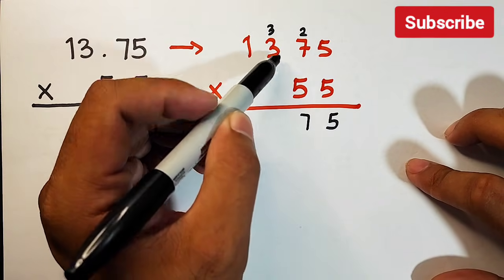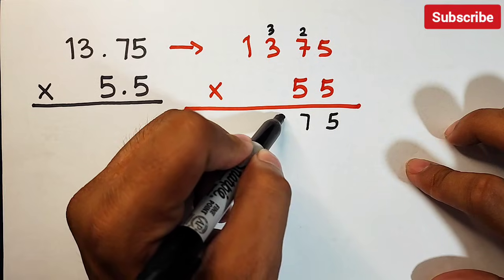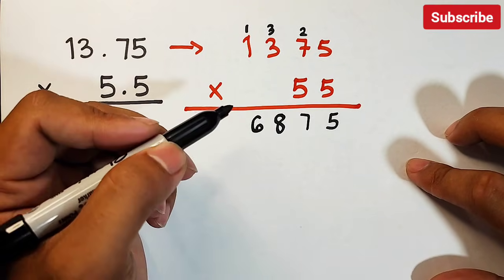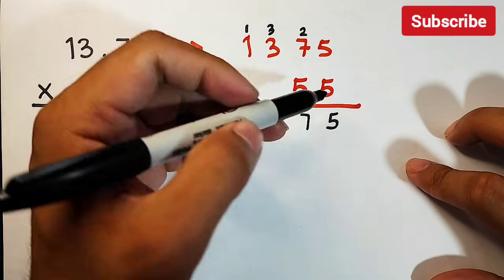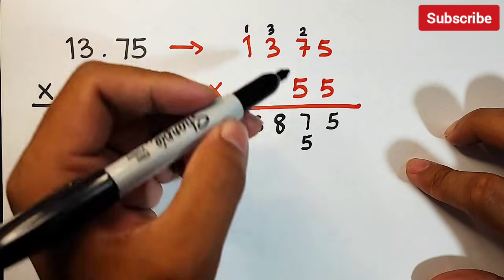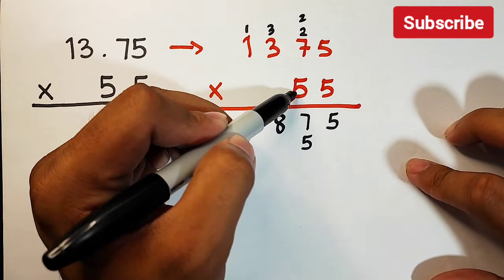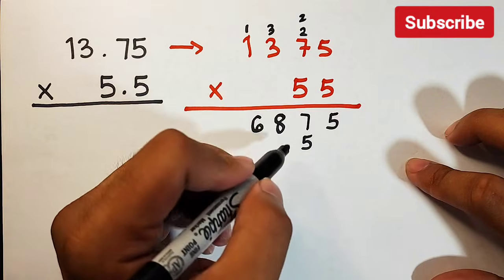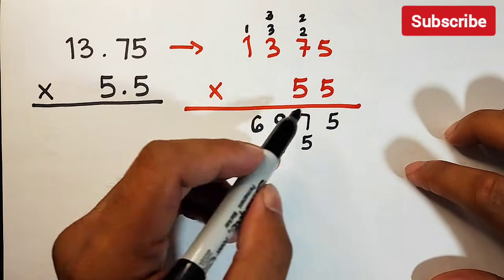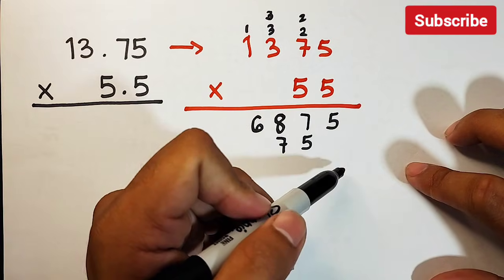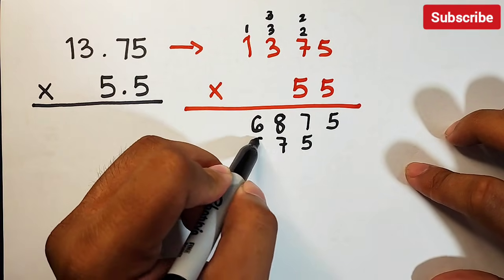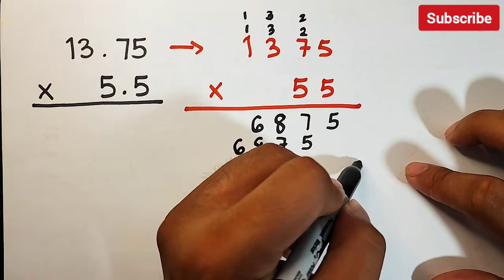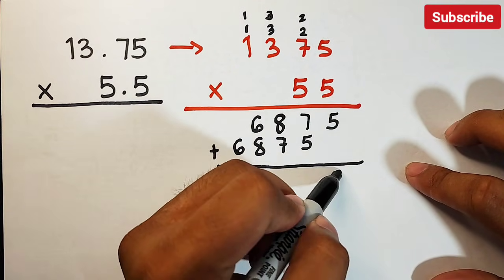Continuing: 5 times 3 is 15, plus 3 equals 18, write 8 and carry 1. 5 times 1 is 5, plus 1 equals 6. For the second row: 5 times 5 is 25, write 5 and carry 2. 5 times 7 is 35, plus 2 is 37, carry 3. 5 times 3 is 15, plus 3 is 18, write 8 and carry 1. 5 times 1 is 5, plus 1 equals 6.